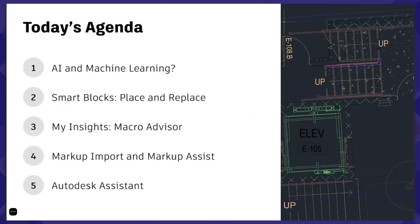What are we going to be talking about today? First of all, I want to talk a little bit about AI and machine learning. There's a lot of that swimming around in the media at the moment, and I'm not really sure if most people really know what it actually is. So I'm going to talk about that, and then we're going to look at some of the actual features in AutoCAD that utilize those types of different technologies.